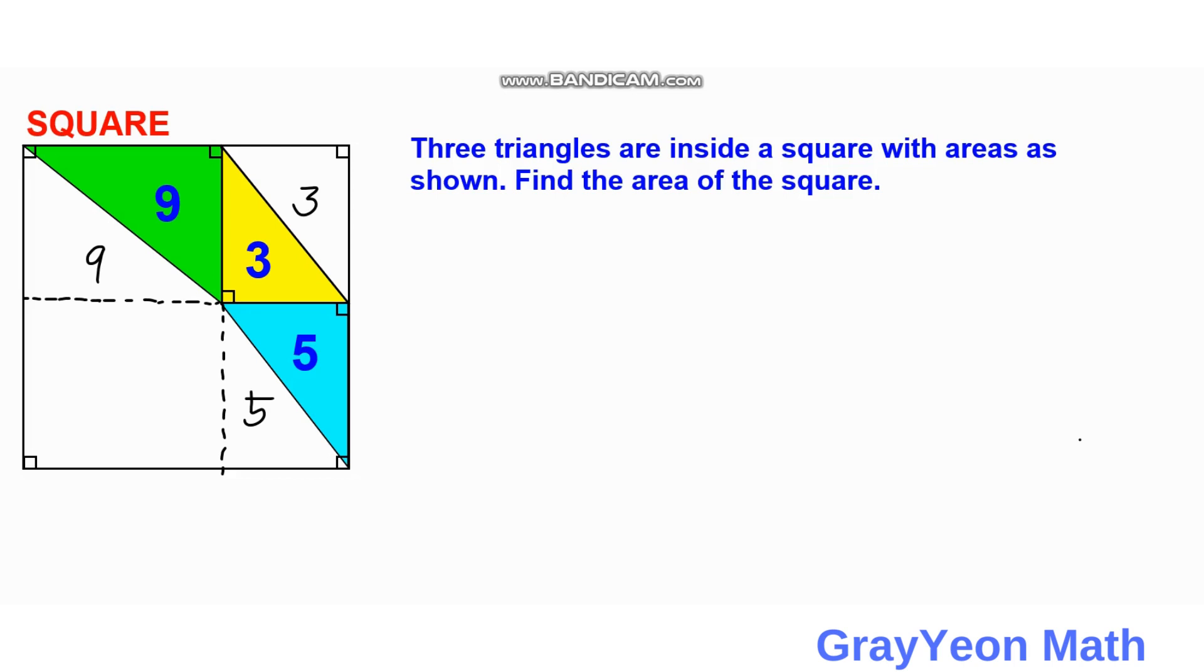Let us call this unknown area as x. Okay, so based on these drawings we can say that the two rectangles on the left are proportional to the two rectangles on the right in terms of area. So we can make an equation regarding that.